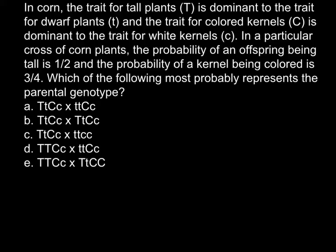In corn, the trait for tall plants is capital T and is dominant to the trait for dwarf plants, small t. The trait for colored kernels is capital C, and is dominant to the trait for white kernels, small c. In a particular cross of corn plants, the probability of an offspring being tall is one half, and the probability of the kernel being colored is three quarters. Which of the following most probably represents the paternal genotype?